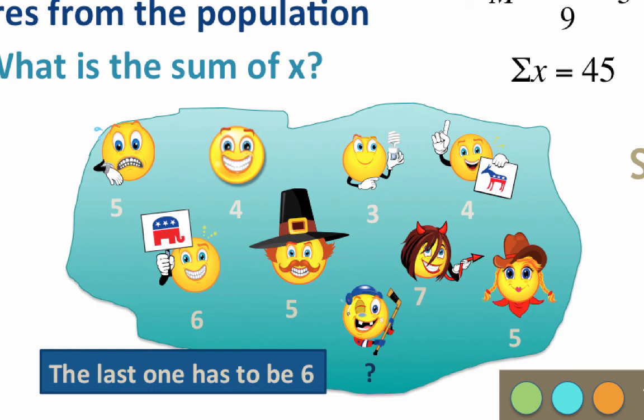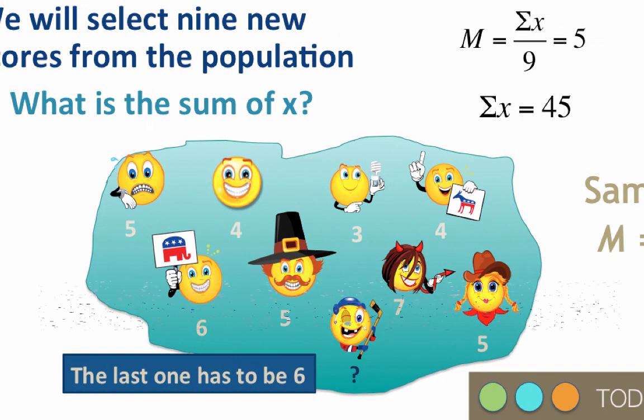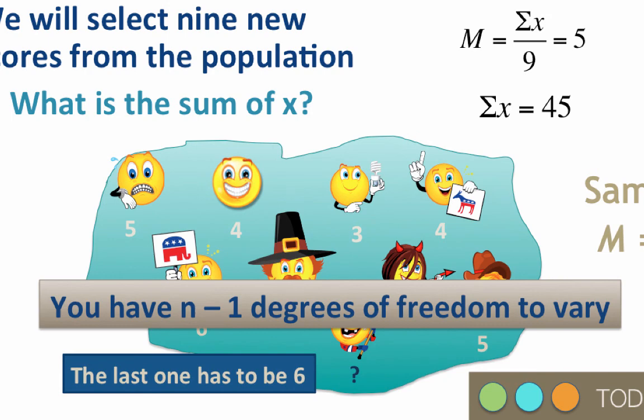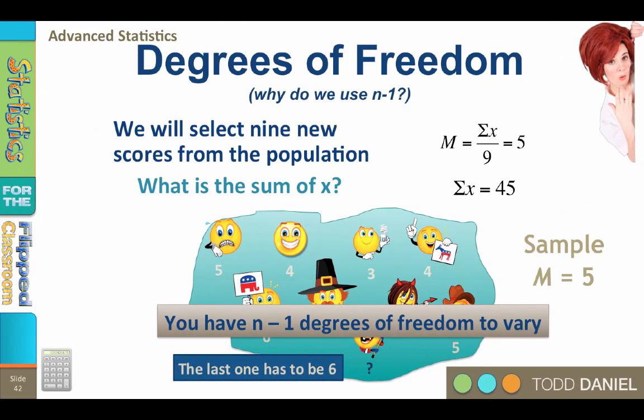You can vary any or all of the population values n, but the last value, n minus 1, will always be defined for you. You have n minus 1 degrees of freedom to vary. Population estimates using n tend to underestimate the true population values, so n minus 1 is a corrective factor.